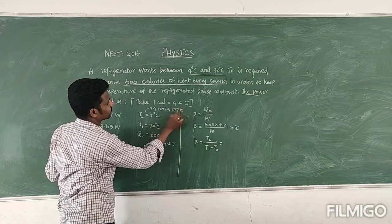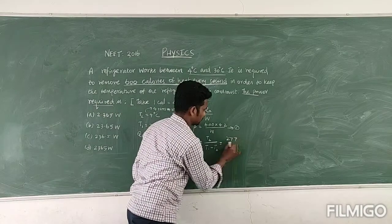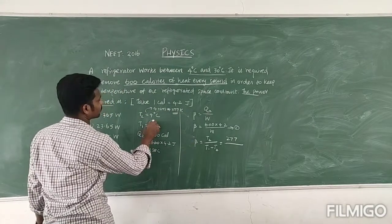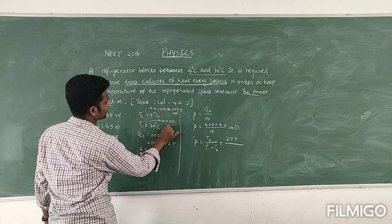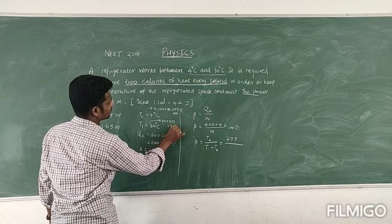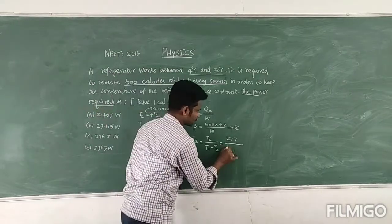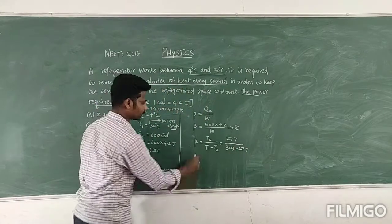So 277 divided by T1 value. T1 value 30, so 30 plus 273, you can write as 303 Kelvin. So this is 303 minus 277.